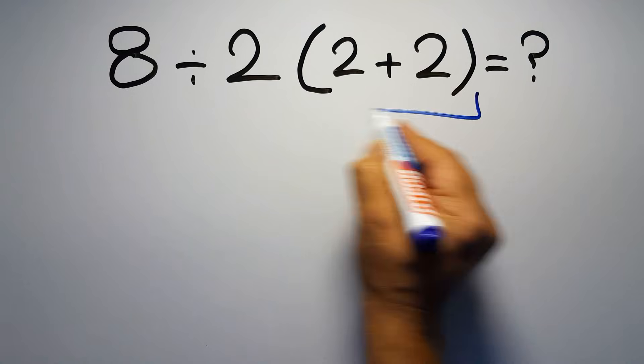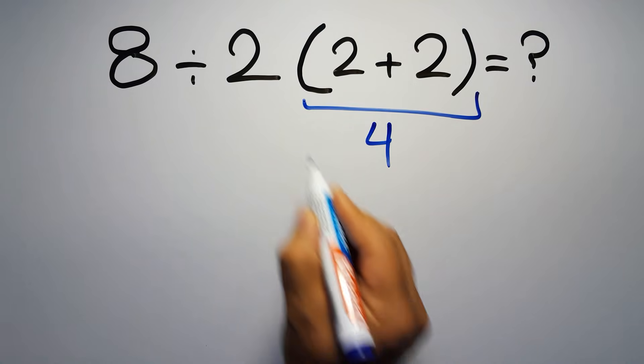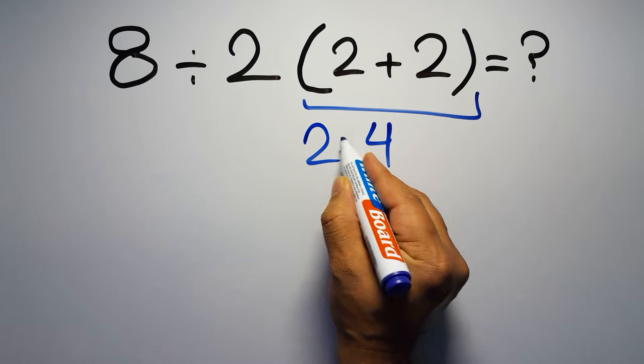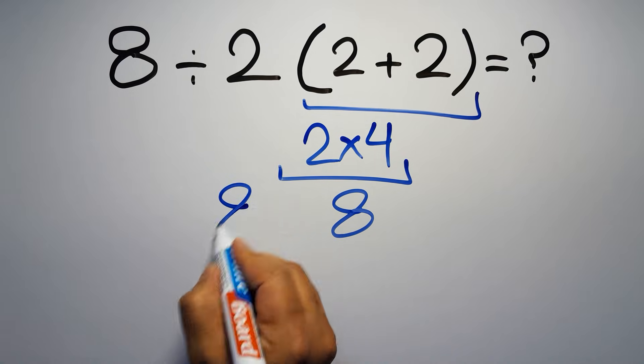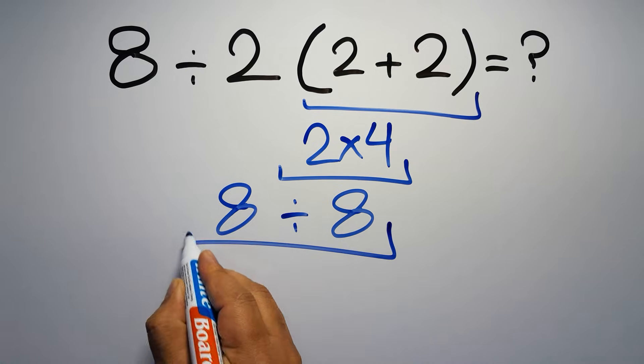2 plus 2 is just 4, and the 2 times 4 gives us 8, so 8 divided by 8, which equals 1.